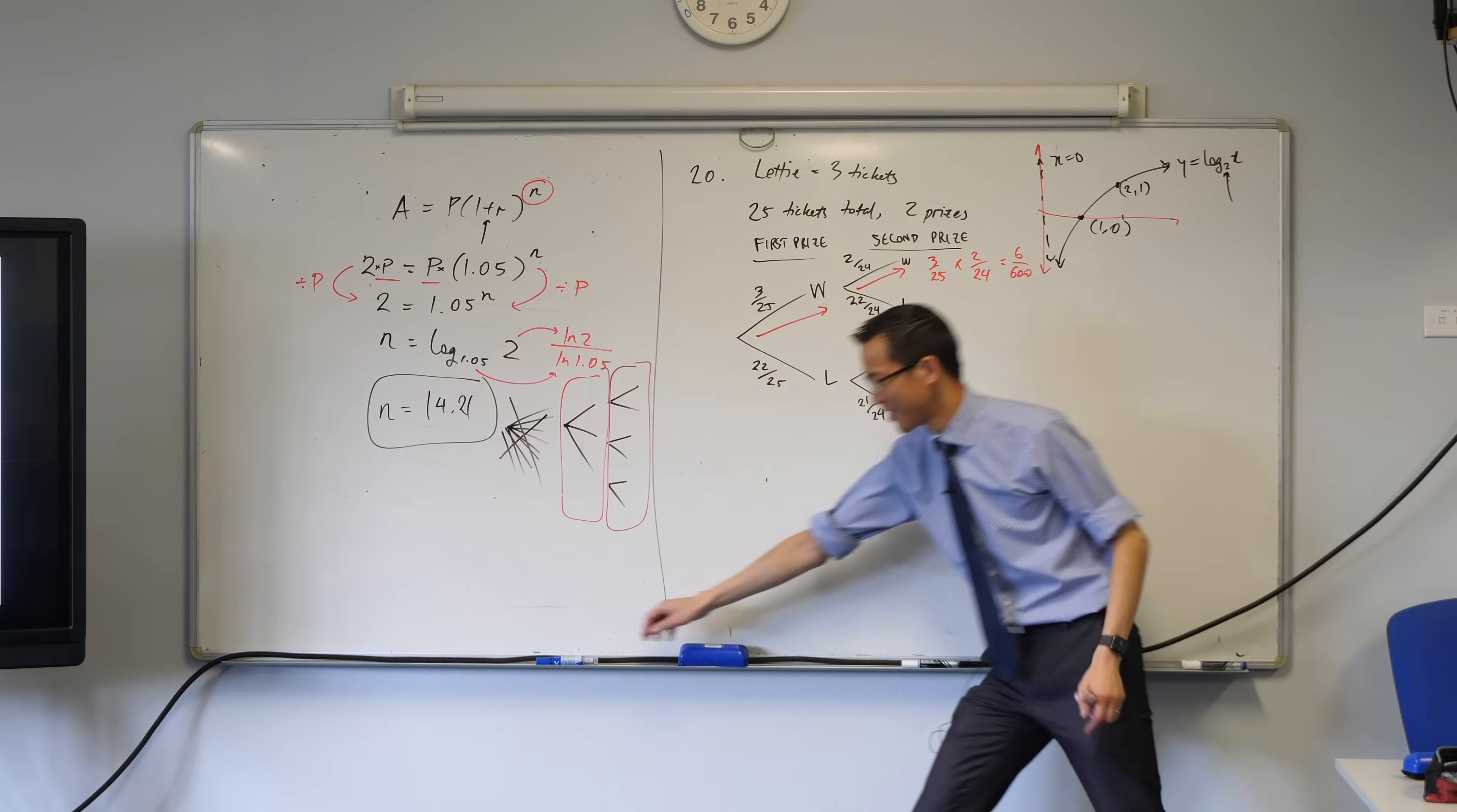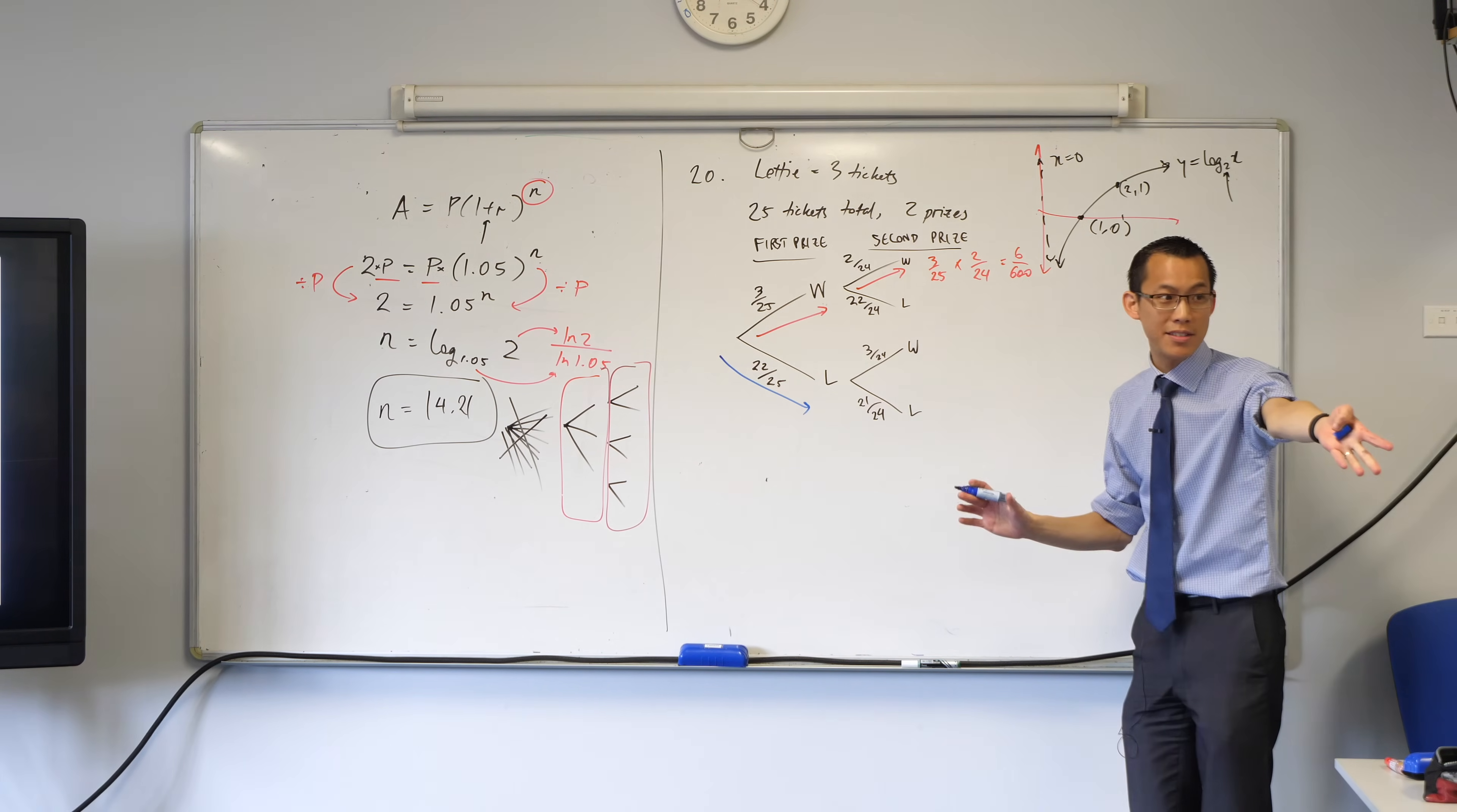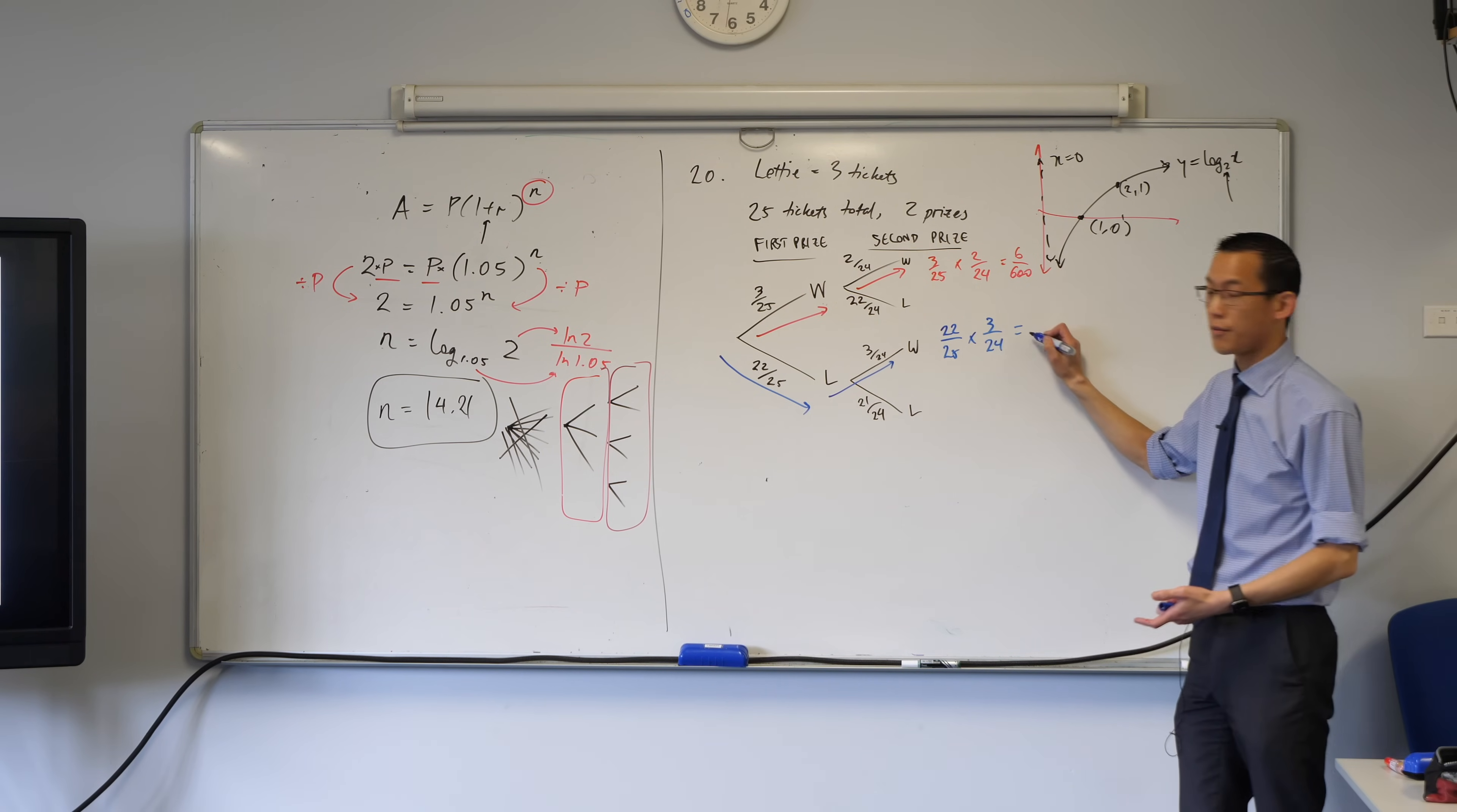Which is, let's use a different colour, right? She can lose the first prize, right? But that's fine. You guys told me the first prize doesn't matter. And then she can win the second prize. So, what's the probability of that? Again, I'm going to multiply it. 22 out of 25 multiplied by 3 out of 24.